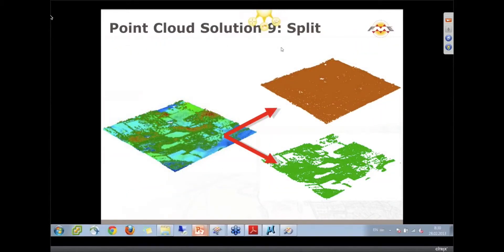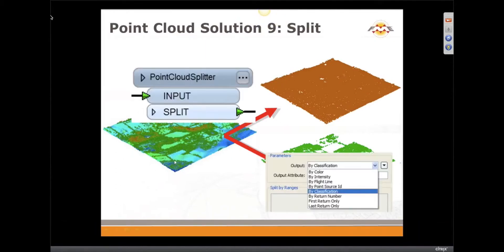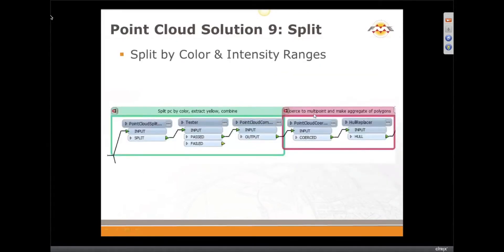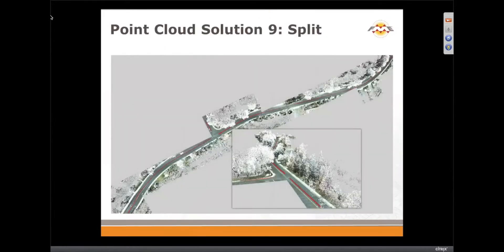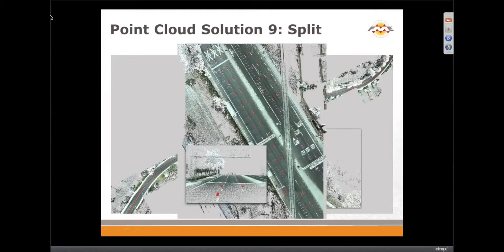We can split point clouds. One customer asked about using clipping to make bare earth models, but splitting would be a better approach — take the last return. If you have classification or return data, you can split by those components. We also added interesting possibilities for splitting by color or by intensity. For example, we can extract road markings from a road surface. Here is an example of extracting yellow color, and here extracting white — though you do need to analyze the shape of extracted features since there is a lot of white to filter through.